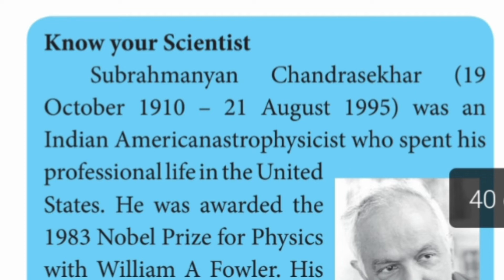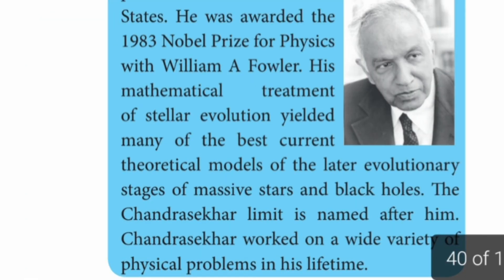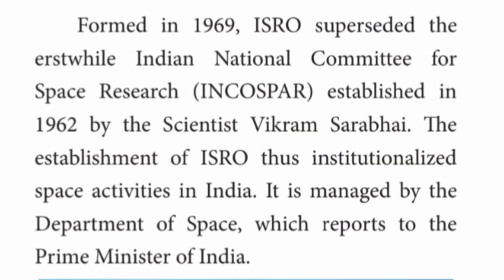Subrahmanyan Chandrasekhar (19th October 1910 – 21st August 1995) was an Indian-American astrophysicist who spent his professional life in the United States. He was awarded the 1983 Nobel Prize for Physics, along with William A. Fowler. His mathematical treatment of stellar evolution yielded many of the best current theoretical models of the later evolutionary stages of massive stars and black holes. The Chandrasekhar limit is named after him.